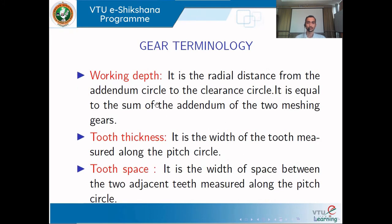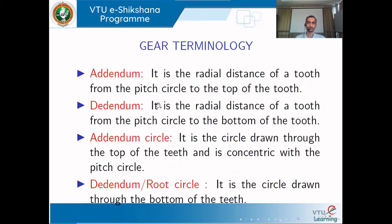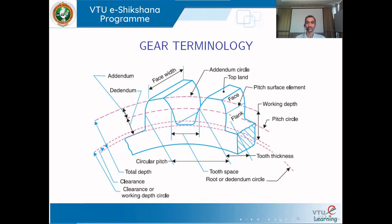Working depth is the radial distance from the addendum circle to the clearance circle when two gears are meshed. It can also be expressed as the sum of the addendum of both gears.